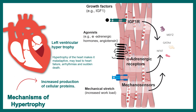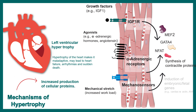All these signals converge on transcription factors which ultimately produce several contractile proteins and myofibrils, making the heart wall thicker. This is an example of pathological hypertrophy.